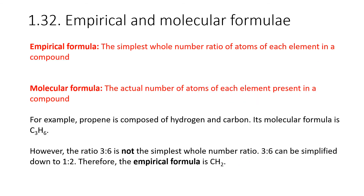Moving on to 1.32 — empirical and molecular formulae. An empirical formula is the simplest whole number ratio of atoms of each element in a compound. A molecular formula is the actual number of atoms of each element present in a compound. For example, propene has molecular formula C₃H₆. The ratio of carbon to hydrogen is 3:6, which simplifies to 1:2, so the empirical formula is CH₂.